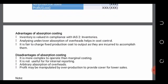The advantages of the absorption costing system: first, it is in compliance with International Accounting Standard No. 2 — Inventory. Second, it involves analyzing under or overabsorption of overhead, which helps in cost control, as under/overabsorption represents a variance arising from comparing expected results against actual results. Third, it is fair to charge fixed production costs to output if they are incurred to produce it — fixed costs are actually incurred to produce a product, so they should form part of the product cost.